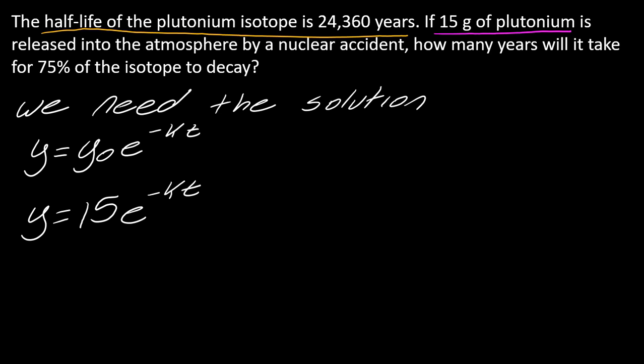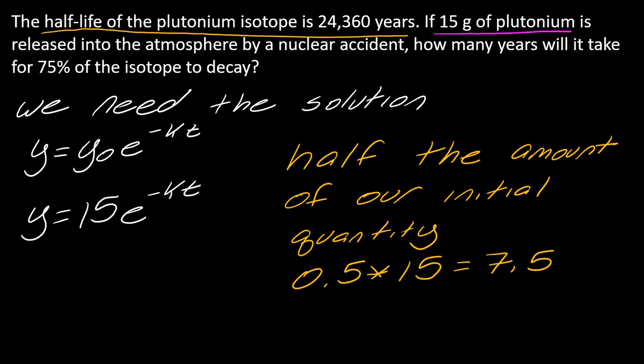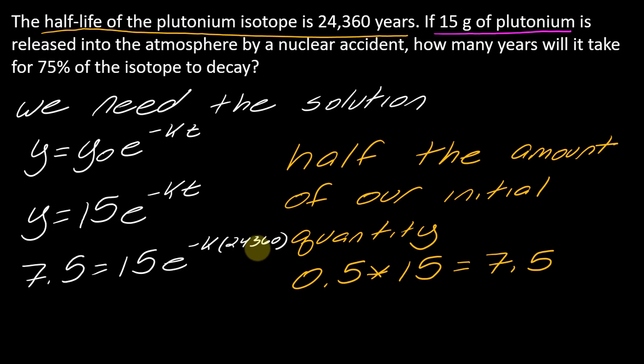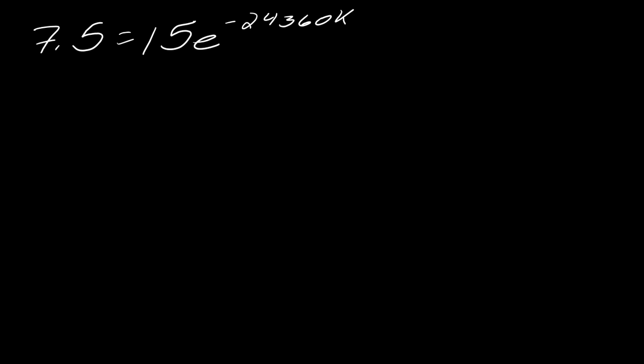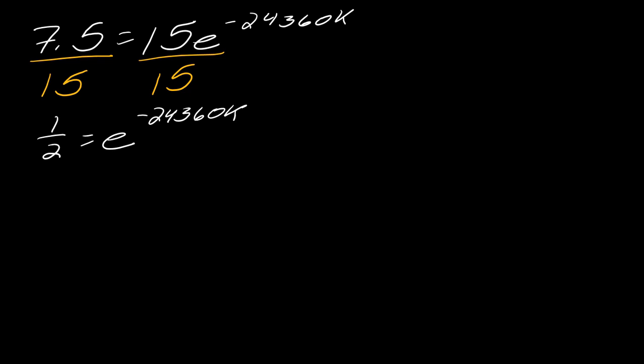And then the other thing I want to take into account here is this half-life — the half-life of the plutonium isotope is 24,360 years. Half-life means the amount of time it takes for this initial quantity to reduce by half. So if we think about half the amount of our initial quantity, I take 0.5 times 15, that's 7.5. Taking this half amount plus the amount of time it took, I can plug that into this equation. So I've plugged in 7.5 for y and those years for time. Now that I have all this in here, this is going to allow me to solve for K. I just want to notice what happens when I divide both sides by 15 — I get 1/2. I'm going to leave this as a fraction instead of a decimal and you'll see why in a second.